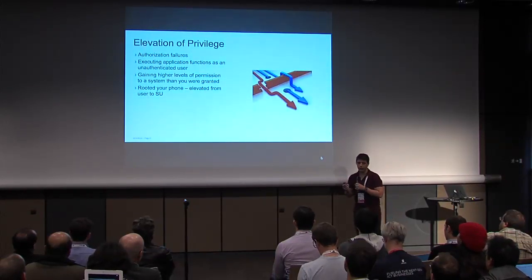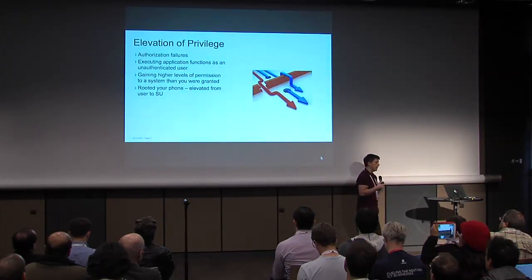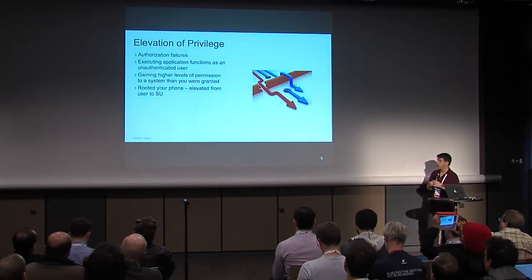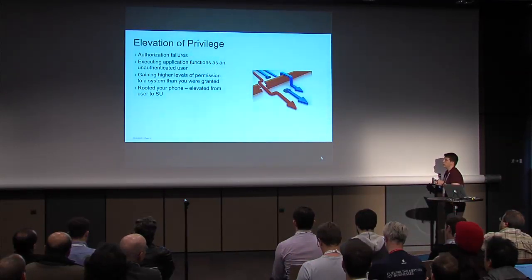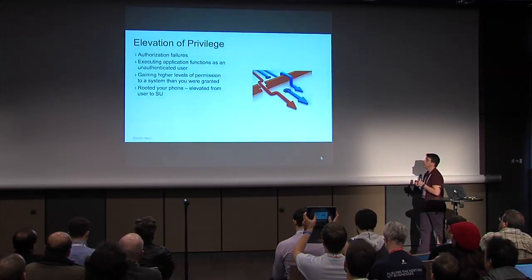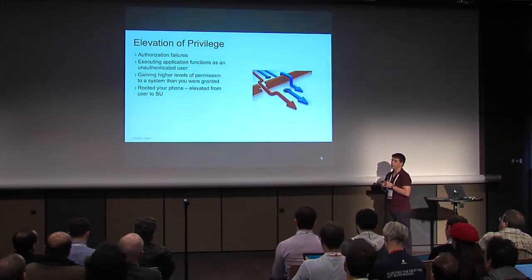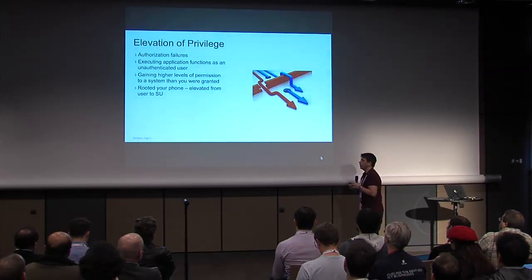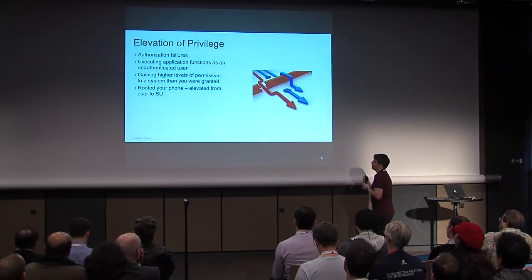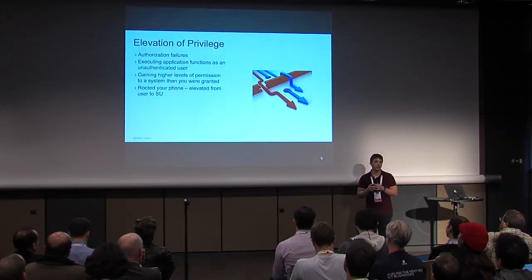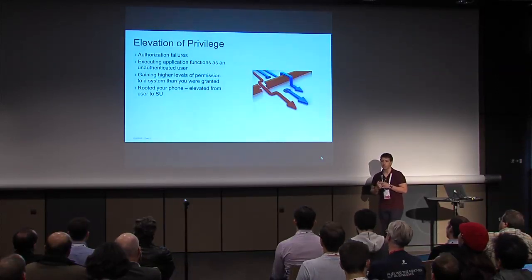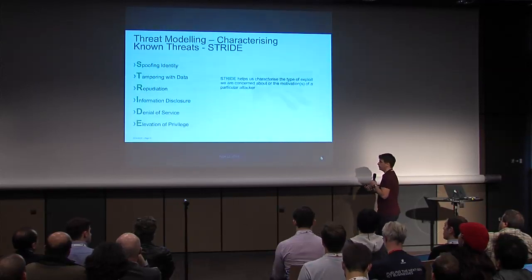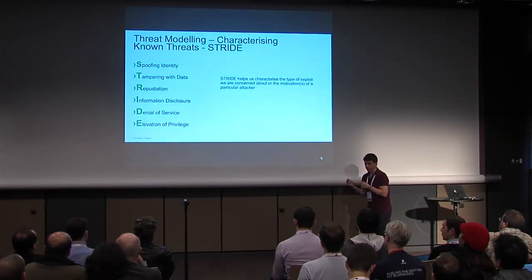Elevation of privilege: any mechanism by which you can gain a higher level of privilege in the system than the designers intended. In the case of OpenStack, this could be a failure in an API node to correctly evaluate you, allowing you to execute things you shouldn't be able to. In a hypervisor context, this could be a hypervisor breakout — going from access on a virtual machine to access on a compute host you were never supposed to have. So again, STRIDE.